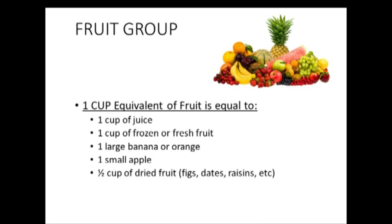For the fruit group, one cup equivalent includes: one cup of juice; one cup of frozen or fresh fruit; one large banana or orange; one small apple; or half a cup of dried fruit such as dates or raisins, since they are more concentrated. If a patient had a cup of orange juice, a cup of fresh fruit, and a large banana, that equals three cup equivalents of fruit. Students are encouraged to visit choosemyplate.gov to review the variety of other foods recommended.